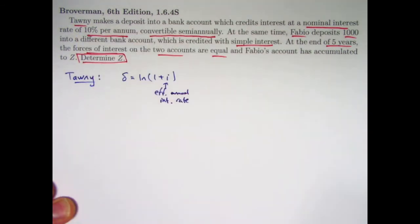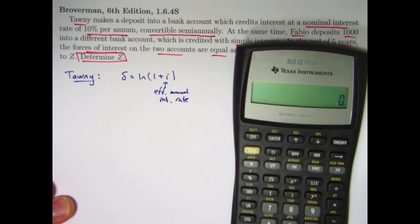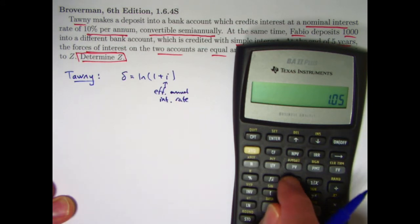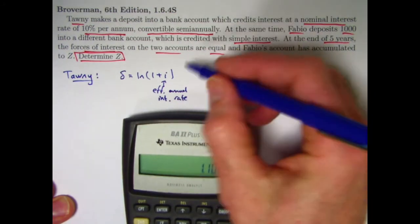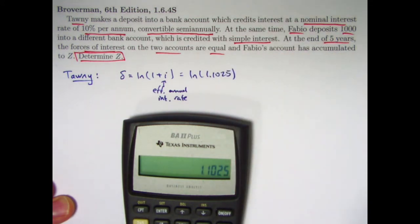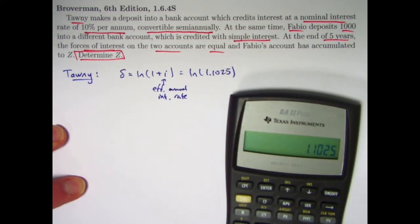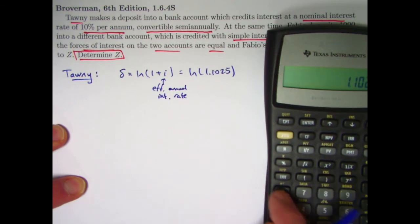That's not 10% here for Tawny. What is it? Well, she converts her interest twice per year. It's 10% per year convertible semi-annually. You take the 10%, divide by 2, and add 1 to it. That's the growth factor for every 6 months, so you have to square that to get the annual growth factor of 1.1025. So the natural log of 1.1025 is the constant force of interest in Tawny's case. Press the natural log button right here.